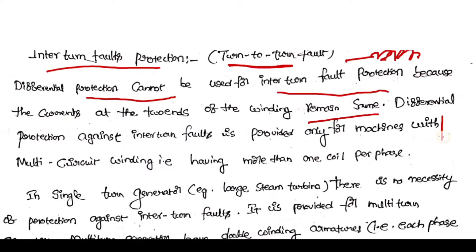Suppose if it is one coil, if you provide current transformers here, there is no current flows through the relay coil because the currents are equal.